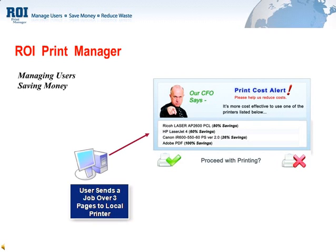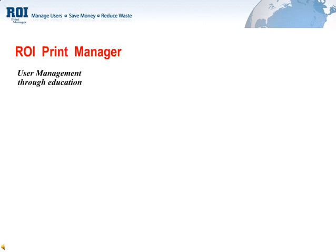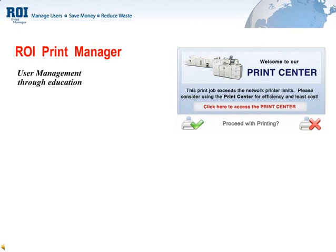As an example, here the CFO says: please use the most cost-effective printer. Below are a list of printers that are more cost-effective for this job, showing the amount of savings. Using ROI Print Manager in a passive mode, users can choose to ignore the advice and that information will be tracked. The rules can also force the user to the alternative, lower-cost device. ROI Print Manager's customizable pop-ups can help a print center capture those larger jobs with a clickable link inside the pop-up that allows direct access to the print center.